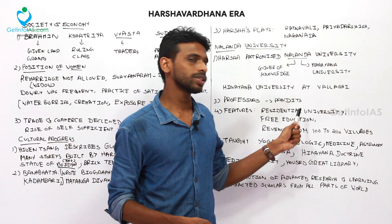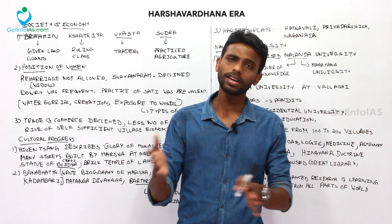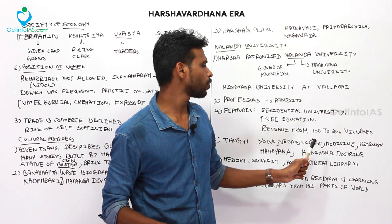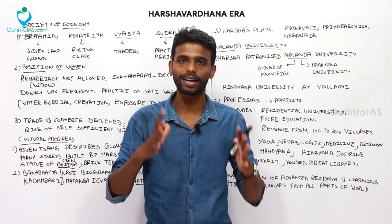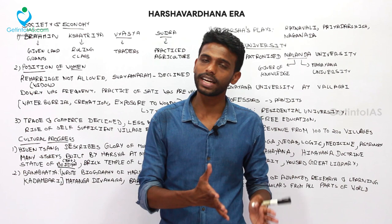Nalanda was a residential university with hostels for boys and girls, and free education was provided funded by revenue from 100 to 200 villages. Subjects taught included yoga, Vedas, logic, medicine, astronomy, Mahayana, and parts of Hinayana doctrine. The medium of instruction was Sanskrit. It housed a great library, had an impressive entrance, and a well-established drainage system — features that impressed archaeologists.